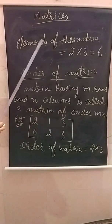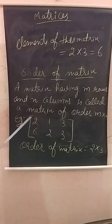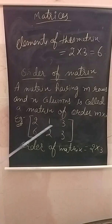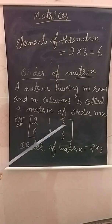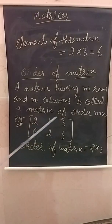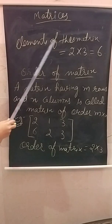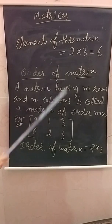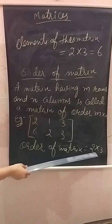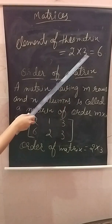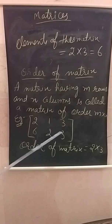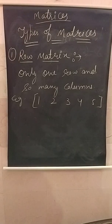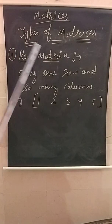Now, elements: in this matrix, these entries are called elements. How many elements are there? One, two, three, four, five, six — six elements. Another way of calculating the number of elements: the order of the matrix is two by three, so two multiplied by three equals six elements.